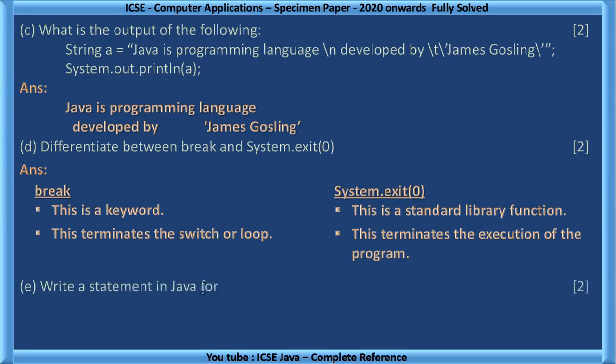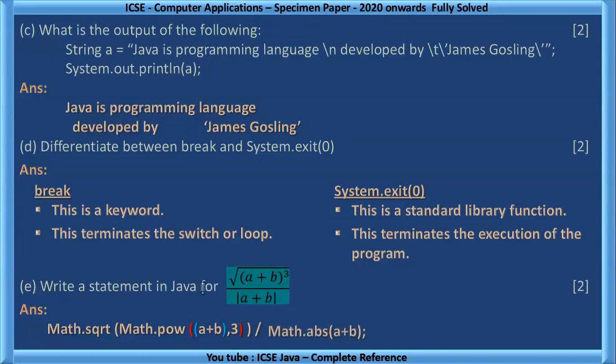Write a statement in Java for root of a plus b the whole cube divided by a plus b inside the two vertical lines. That means the absolute value. First let us write the numerator one. For square root we will have Math.sqrt of a plus b whole cube. So Math.sqrt of Math.pow of a plus b comma 3. A plus b can be inside the bracket or without that, that is option. Divided by Math.abs of a plus b and then we terminate it.